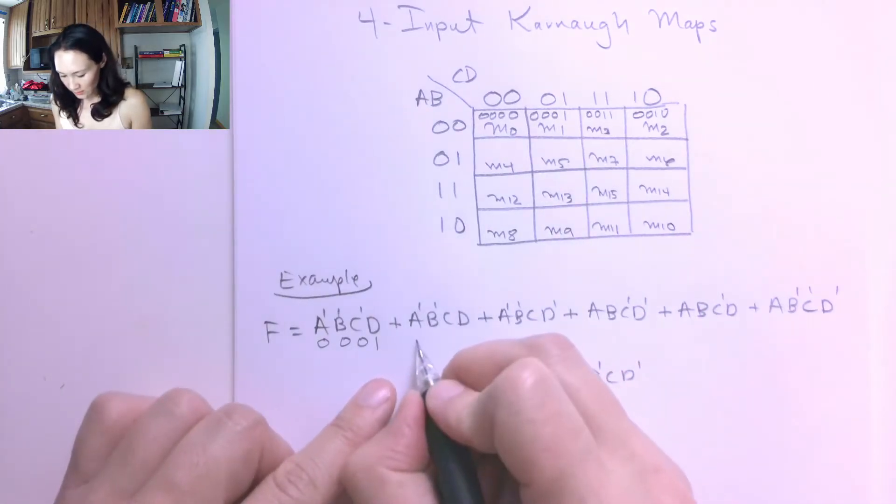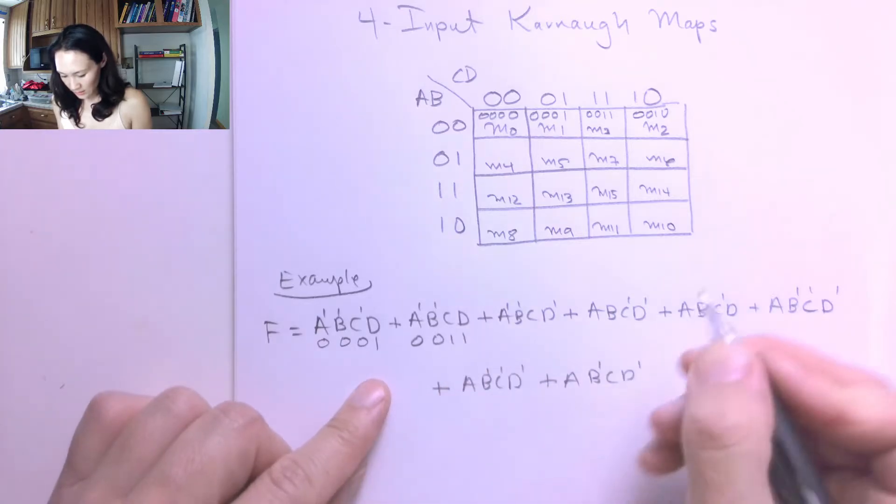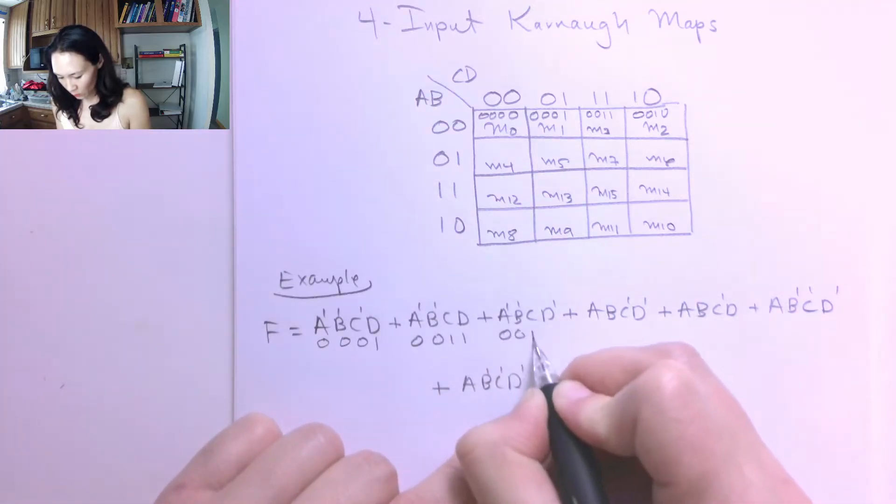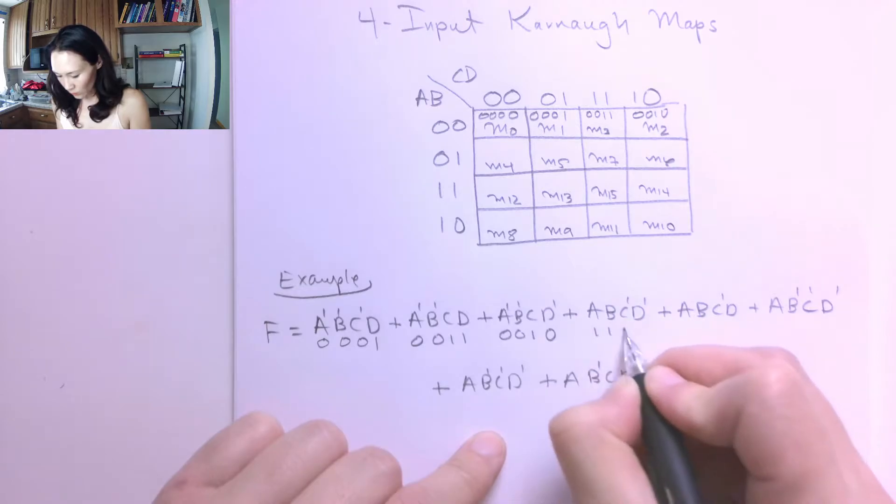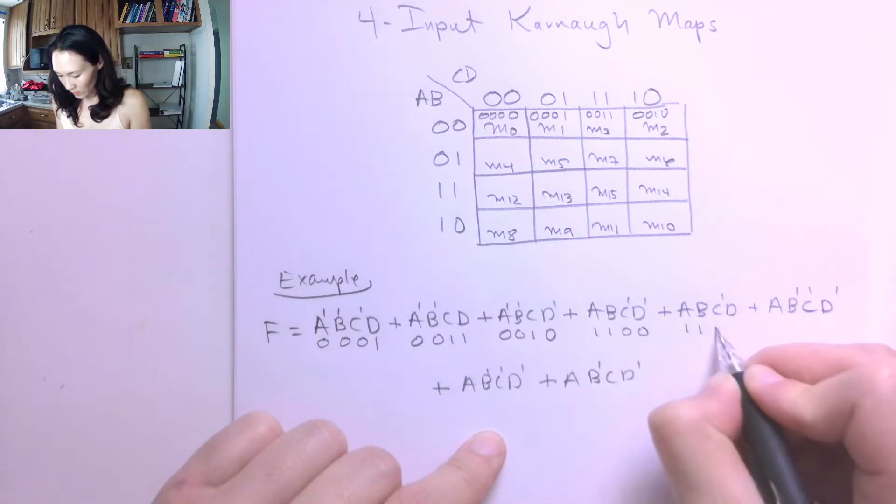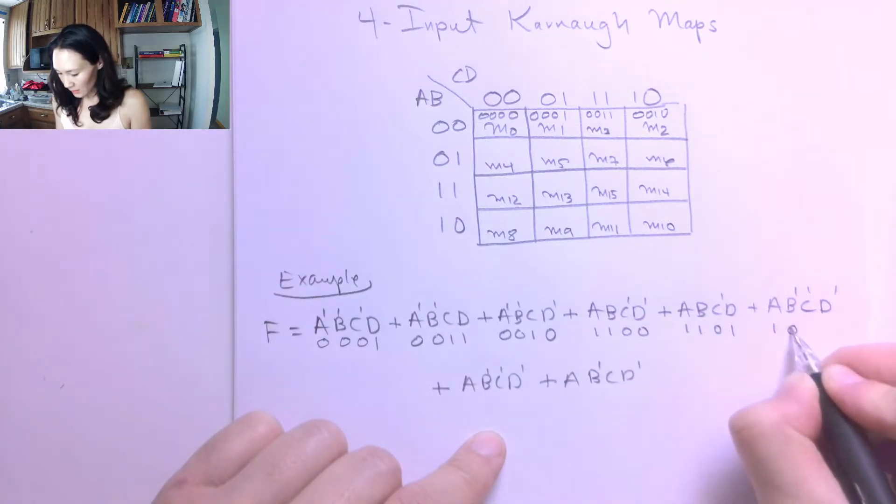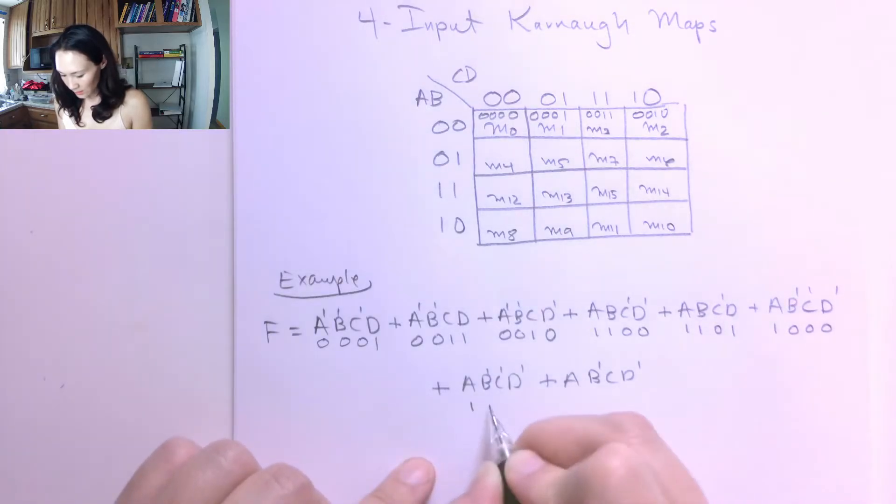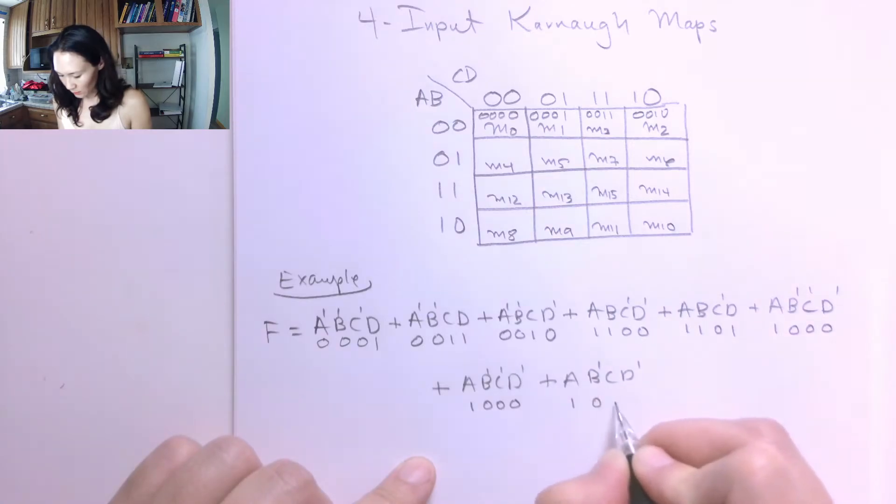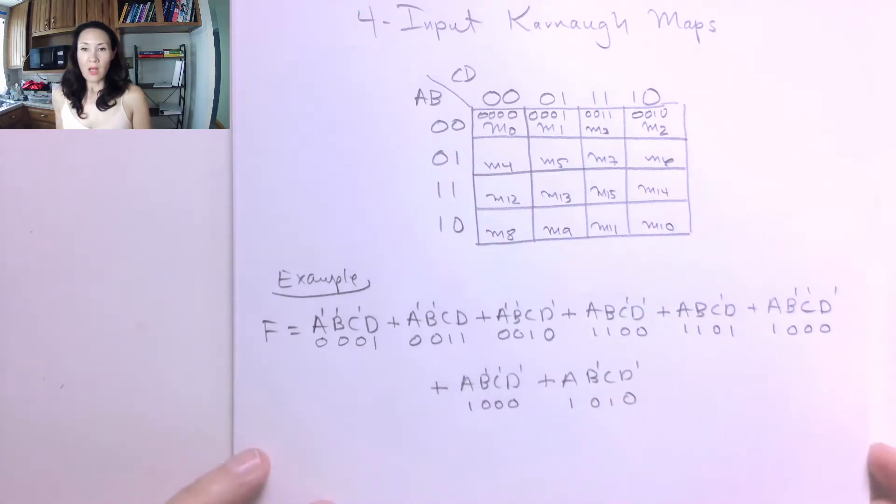So then for the next one, this gives me 0, 0, 1, 1. Continuing on 0, 0, 1, 0. This is 1, 1, 0, 0, 1, 1, 0, 1, 0, 0, 1, 0, 0, 1, 0, 0 again, I have a duplicate term. And here this is 1, 0, 1, 0.